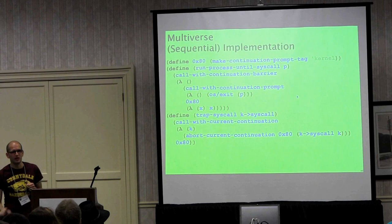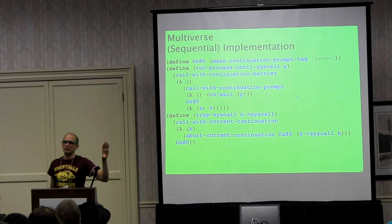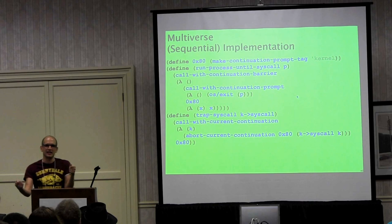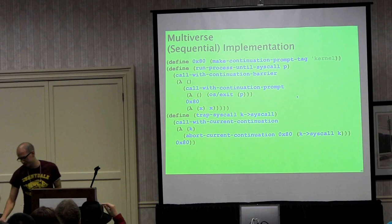Let me show you the entire source code of the operating system. Here is the entire source code of a system call — it uses delimited continuations to grab the state of the process, remember where it was, and send that to the OS along with a request for what we actually want to happen.